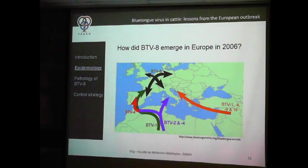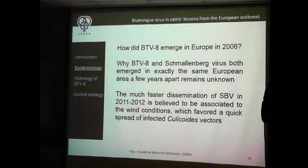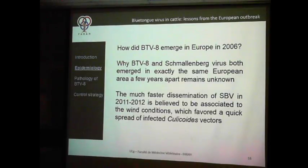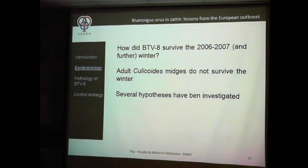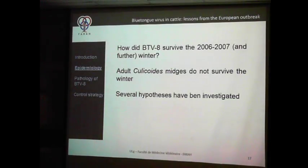There must be some kind of clandestine traffic — we don't know. How did this virus emerge in Europe in 2006? We don't know. The much faster dissemination of Schmallenberg virus is believed to be associated mostly to wind conditions, and this has been clearly shown by several research teams and publications.